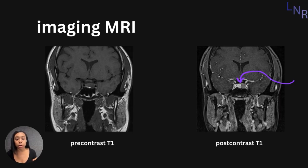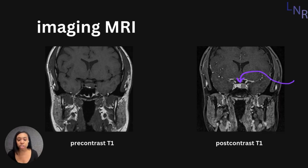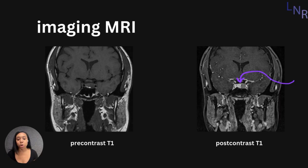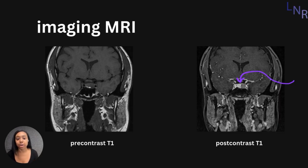On the right side of the screen, we have a post-contrast image of the pituitary adenoma. We can see the brightly lit structures surrounding the pituitary adenoma, and we can clearly see the defined, darkly colored pituitary adenoma within this view, highlighted with the purple arrow.